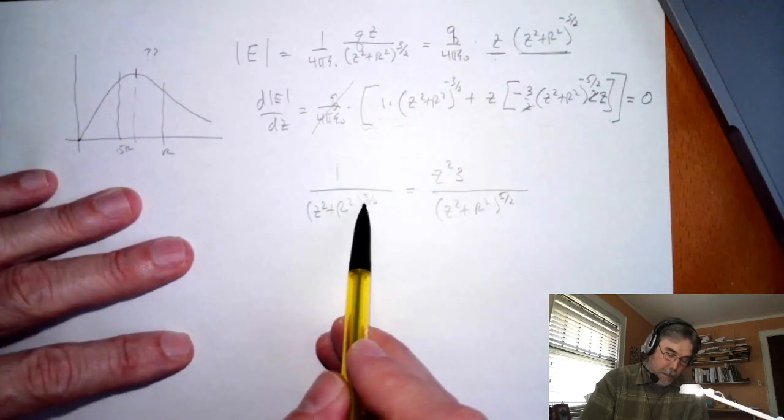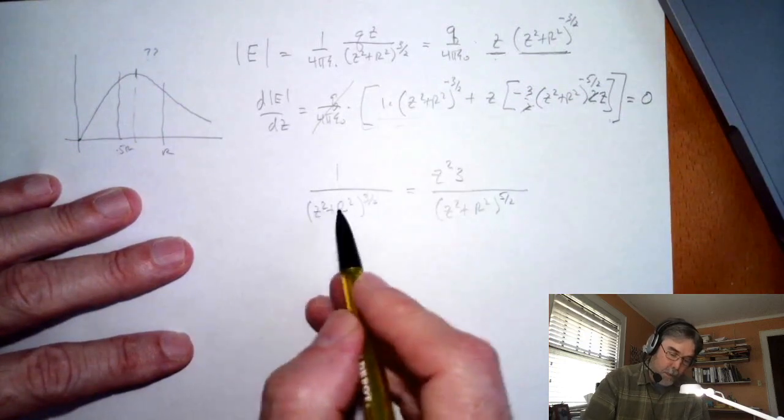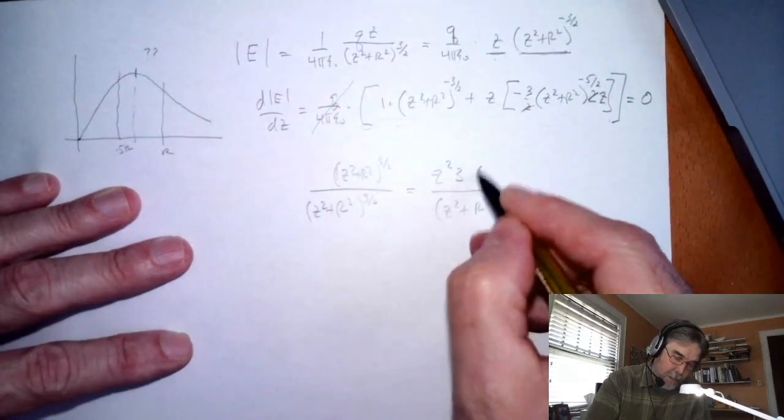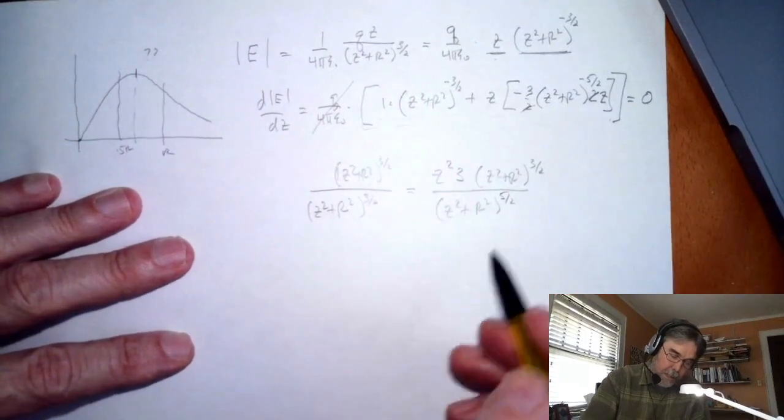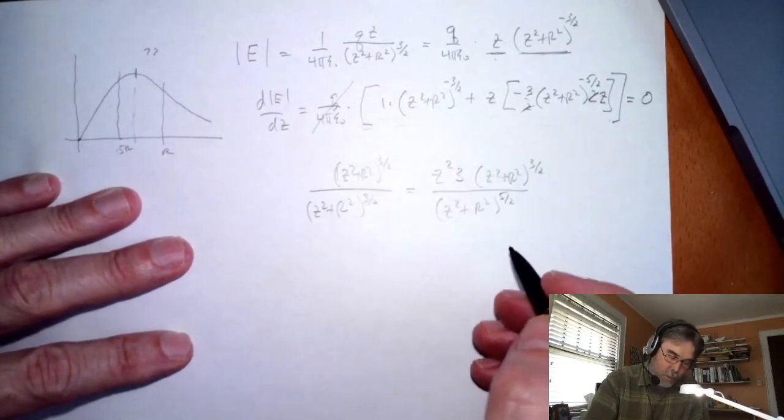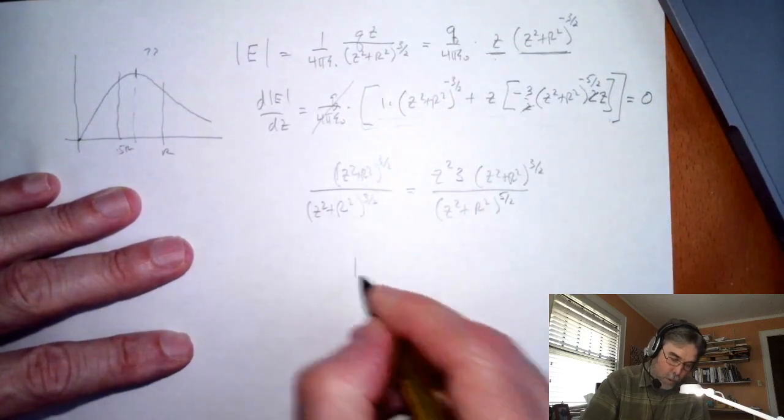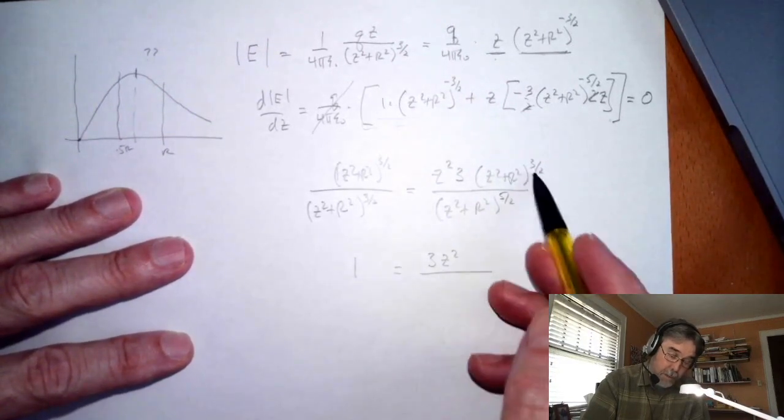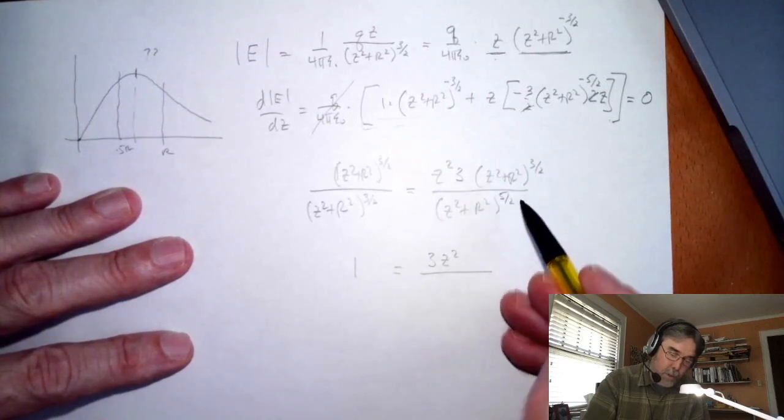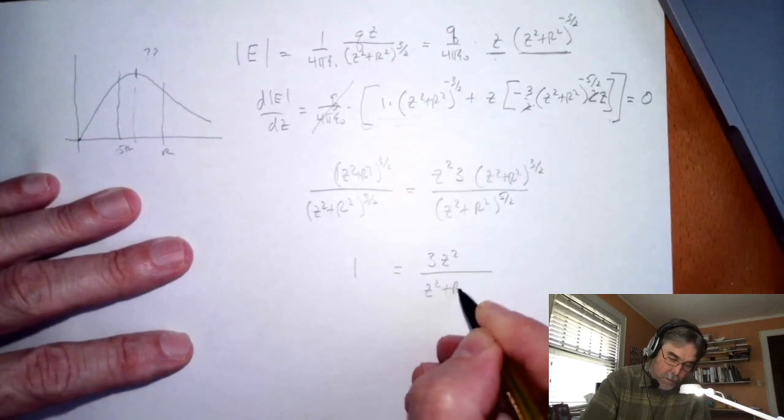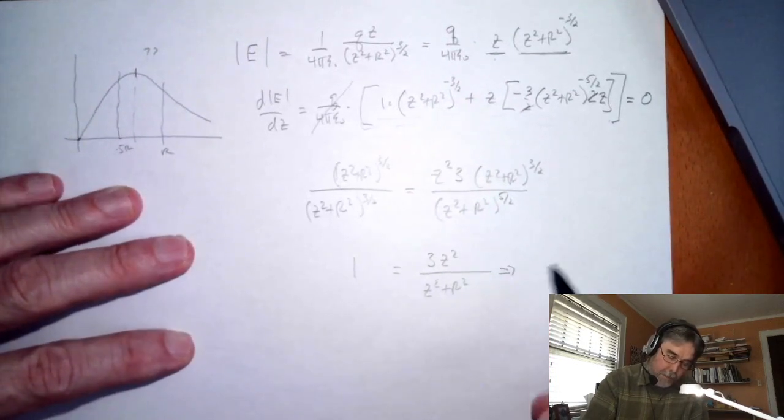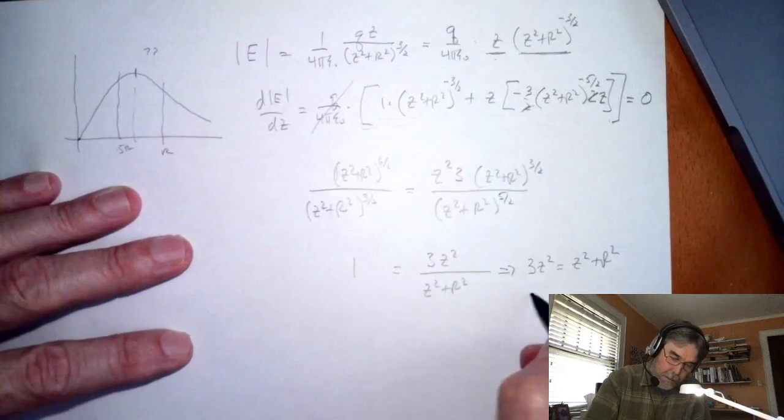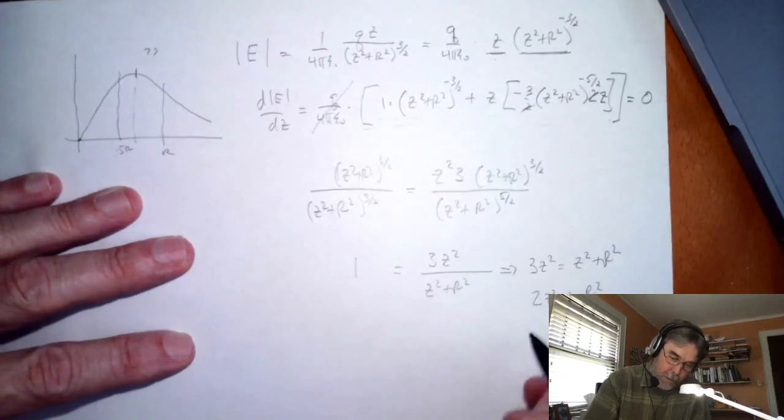Then down here I get z squared plus r squared and this is to the 5 halves. I can multiply through on both sides by z squared plus r squared to the 3 halves. That gets rid of three factors of this square root, this left-hand side just becomes 1, this becomes 3z squared and then I just end up with z squared plus r squared downstairs. If I multiply through I get 3z squared is equal to z squared plus r squared, that means 2z squared must equal r squared and that means z squared is r squared divided by 2.